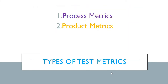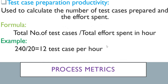The types of test metrics are classified as process metrics and product metrics. These metrics help you to define your process and also help you to define your product. That's why the main two classifications of test metrics are process metrics and product metrics. Each category will have a list of metrics underneath it. Process metrics are used in the process of test preparation and test execution phase of the software test lifecycle.